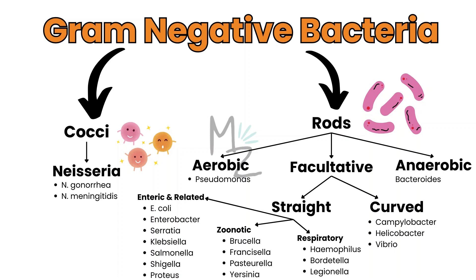Facultative rods are further subdivided into curved ones that include Campylobacter, Helicobacter, and Vibrio, and also into straight ones that are further subclassified into enteric and related — which includes E. coli, Enterobacter, Serratia, Klebsiella, Salmonella, Shigella, and Proteus — into zoonotic that includes Brucella, Francisella, Pasteurella, and Yersinia, and respiratory that includes Haemophilus, Bordetella, and Legionella.